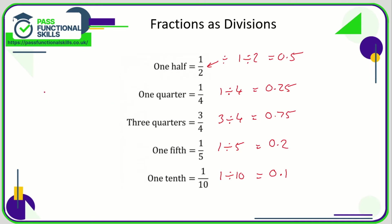So we can convert any fraction into a decimal just by dividing the top by the bottom. We could take any number like three sevenths — that line in the middle means divide — so three divided by seven is a fairly horrible number, 0.428, and it goes on and on forever. So any fraction can be turned into a decimal by dividing the top by the bottom.